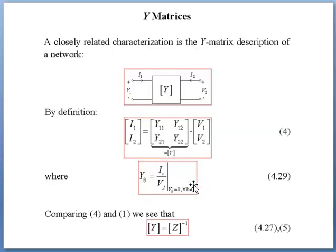Next, we have Y matrices. Y matrices is for admittance. A closely related characterization is the Y matrix description of a network. You have port 1 with V1, I1 and port 2 with V2, I2 coming into the Y network. By definition, [I1, I2] equals [Y11, Y12; Y21, Y22] times [V1, V2]. Your Yij equals Ii over Vj. Comparing equation 4 and 1, we see that Y is actually the inverse of Z.